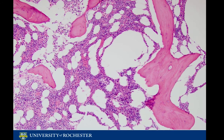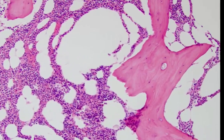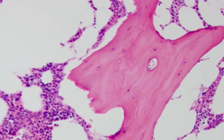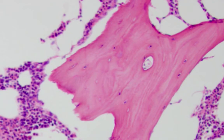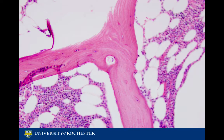Taking a closer look at the trabeculae, we'll see that it has a hardwood floor pattern, and this is made up of type 1 collagen fibers. When we zoom into a 20x image of the trabeculae, we'll notice bone cells called osteocytes that appear to be trapped in these little pockets called lacunae.